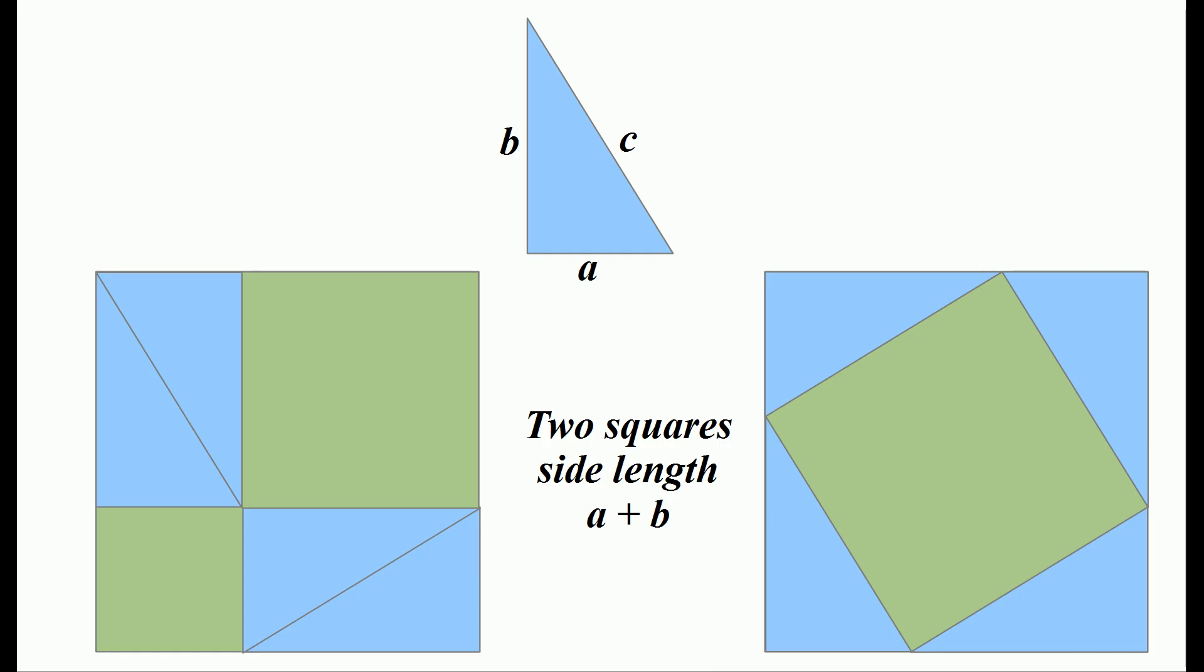For the square on the left, the lower left green area has an area of A squared, and the upper right square has an area of B squared. For the figure on the right, the green square has an area of C squared.